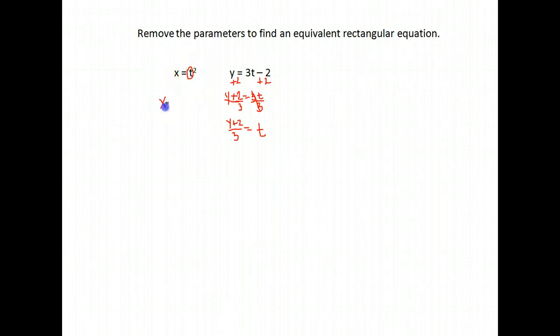So here is t. That gives me x equals, instead of t, I need to put this value here, which was y plus 2 over 3, and that's supposed to be squared.